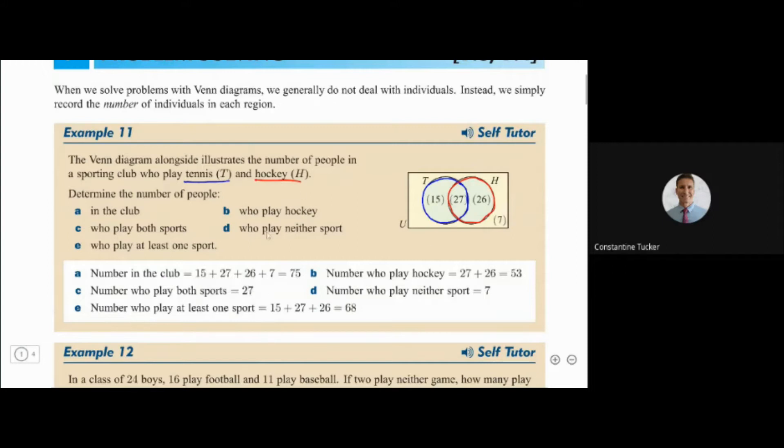Now the other key word we need to be familiar with is the word neither. So when they say neither they mean none. Not one, not the other, neither. So that means we have to find the people outside and that would be seven. So seven people play neither.